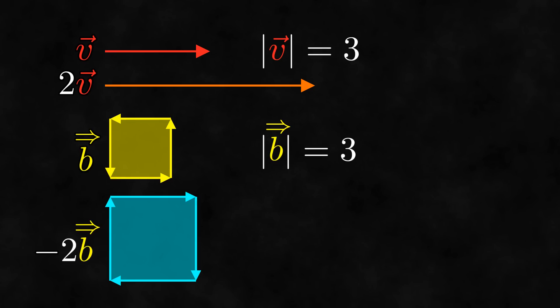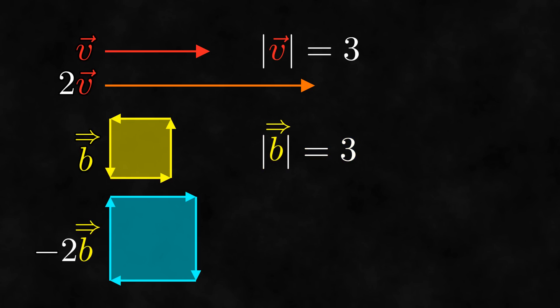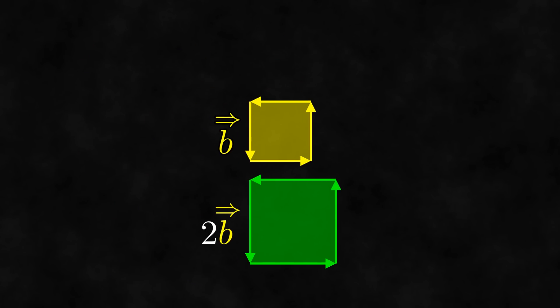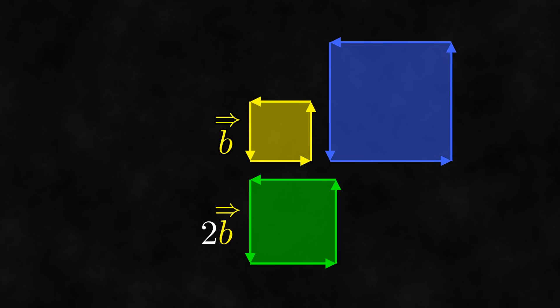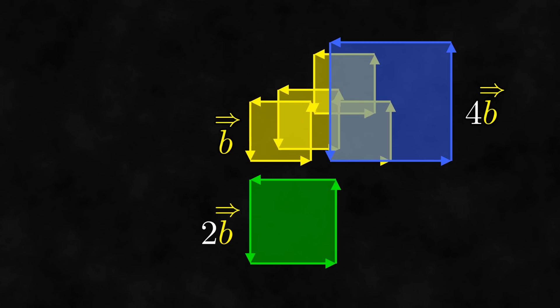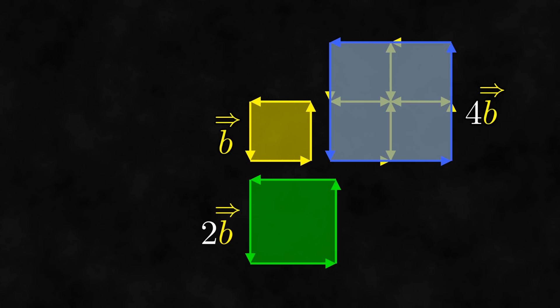Note that I'm using the same notation for bivectors as I did for vectors. We write the magnitude of a bivector the same way that we write the absolute value, and we write scaling a bivector the same way as multiplication. These operations should be pretty simple, but there is one issue when it comes to scaling bivectors that you need to be aware of. You might notice that the side length of the scaled bivector is not twice the side length of the original bivector. This is because area scales with the square of distance.